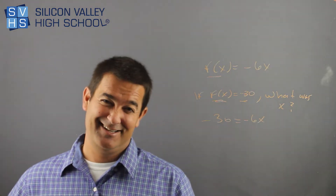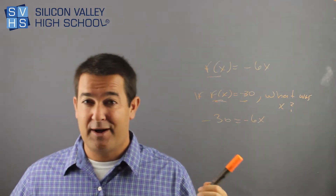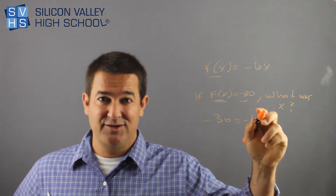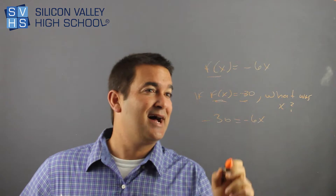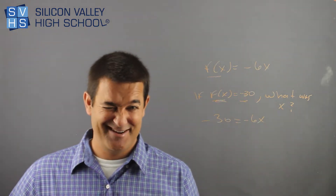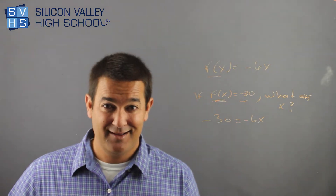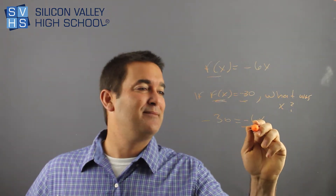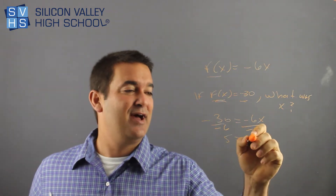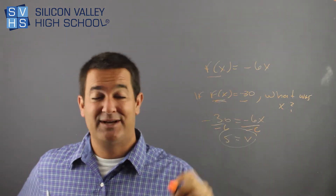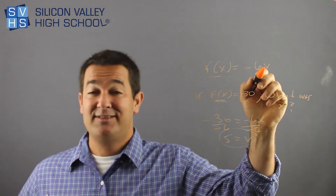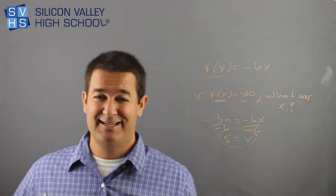Is that confusing? The former problem was they gave me input values and asked for the output. This time they knew the output and asked what is the input. Divide by negative 6 on both sides — 30 over negative 6 is 5, so x is 5 if the output is negative 30. Let's check: if you put 5 in, negative 6 times 5 is negative 30. It checks out.